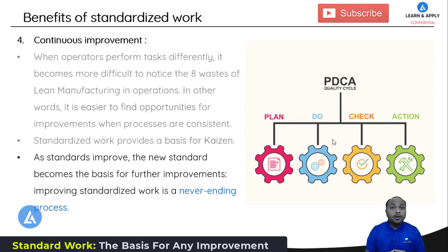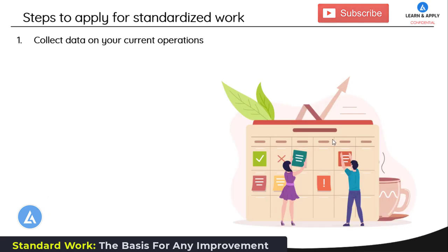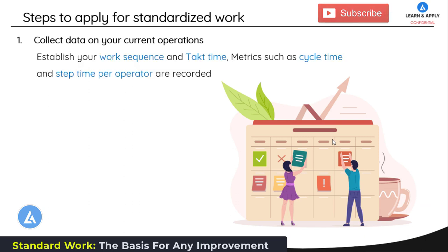Now let's understand the steps to implement standardized work in real life. There is a six-step approach. The first step is to collect data on your current operations — establish your work sequence and takt time, and record metrics such as cycle time and step time per operator.